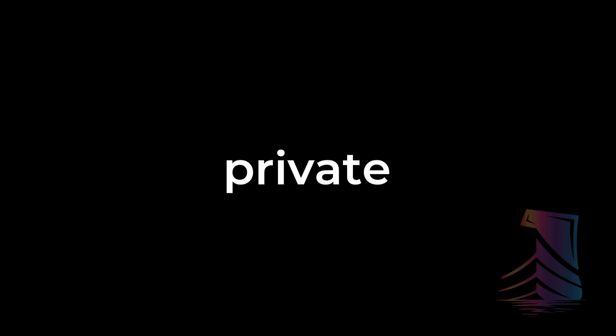When discussing accessor modifiers, I mentioned that it's best to keep data private whenever possible for the purposes of code security and easier debugging. This principle has been around for much longer than I've been coding, and that's going on 25 years now. The issue with keeping data private, however, is that outside classes can't even see the value of a private data field, never mind change it.